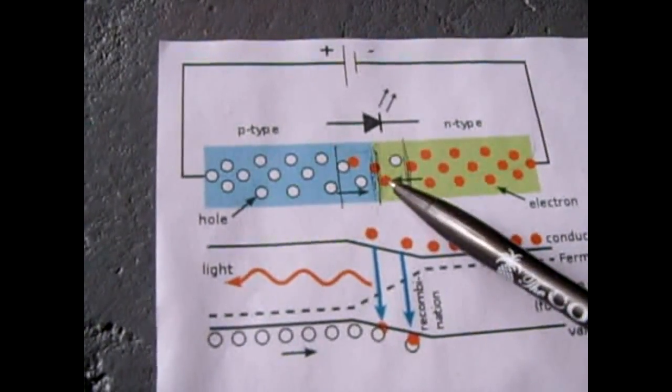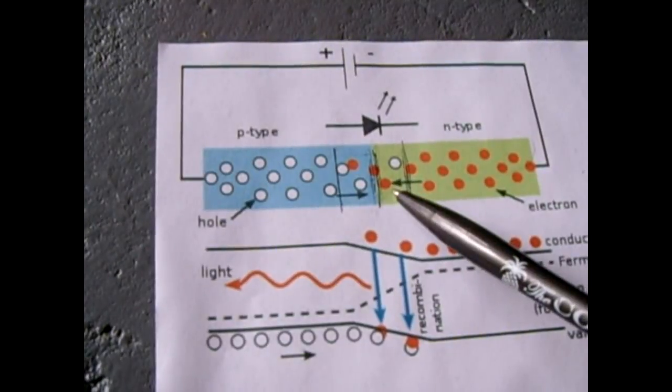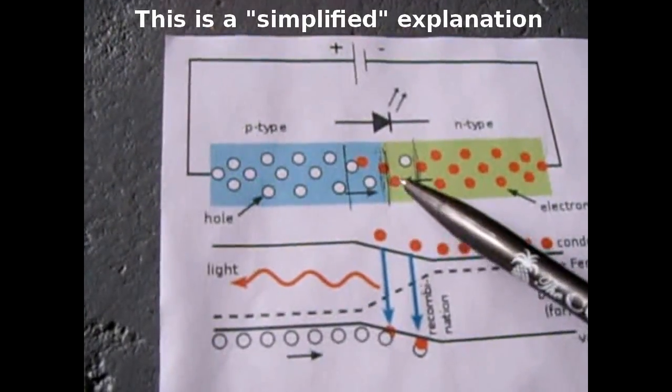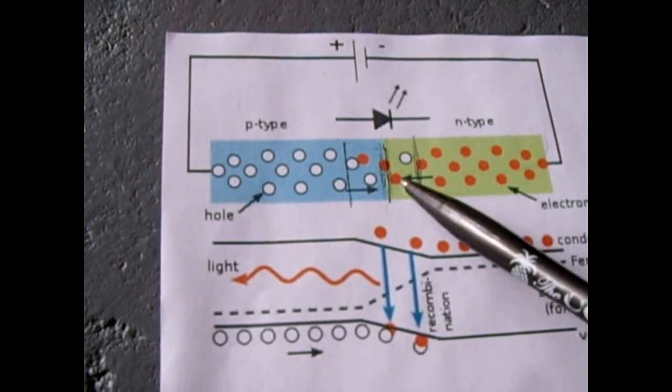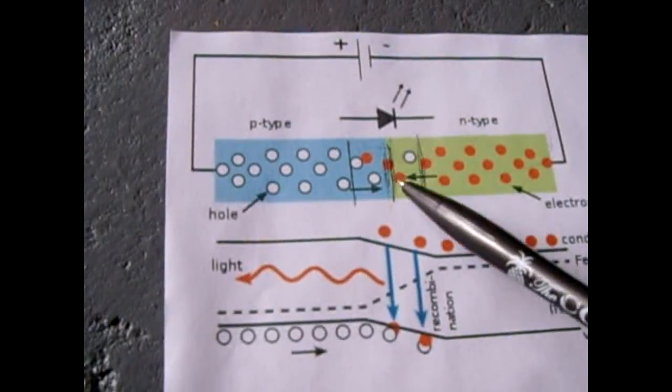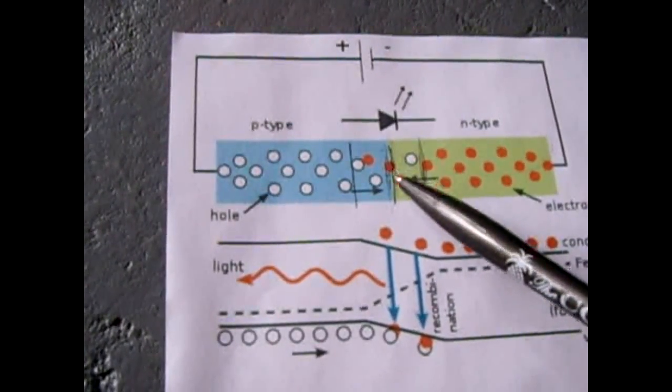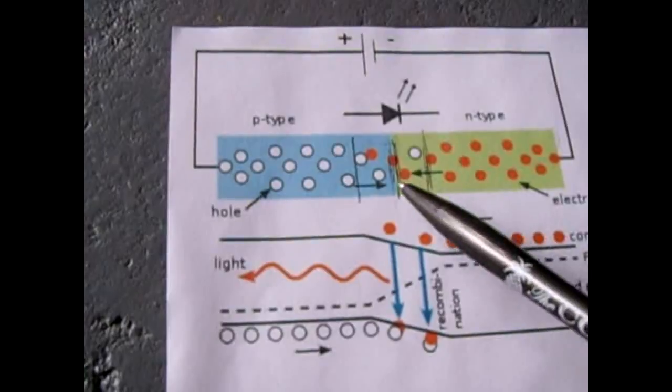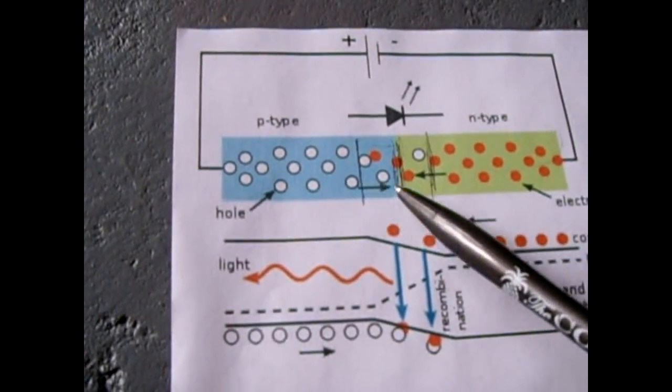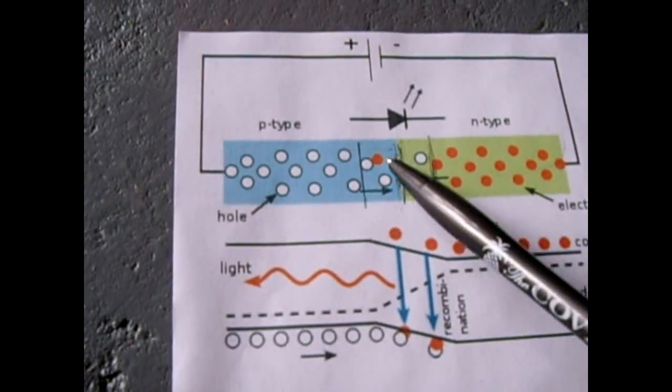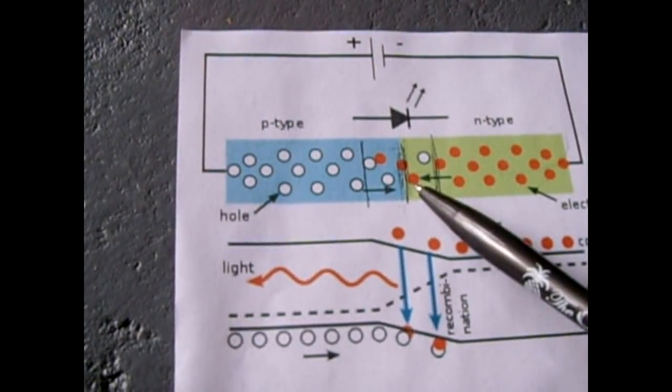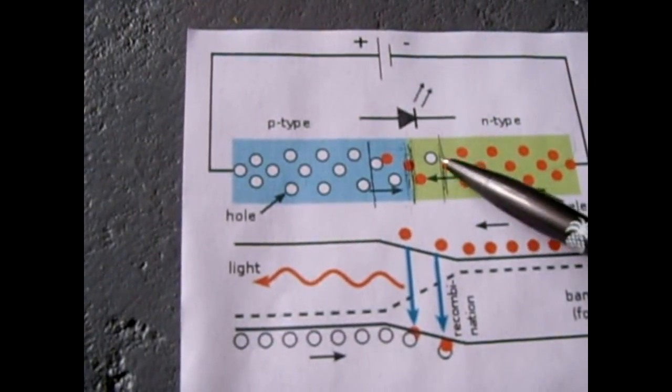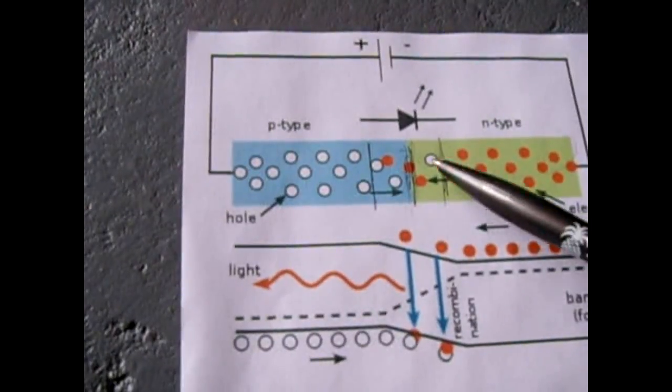Once the depletion zone is gone, the electrons can easily flow across to the p-type side to fill all the little holes in it. Current will then flow through the LED. In the process, as the electrons jump across, depending on how wide of a gap they have to jump, a certain amount of light or photons is given off. Light is given off because when these electrons make that jump, energy is lost and that is given off as photons or light.